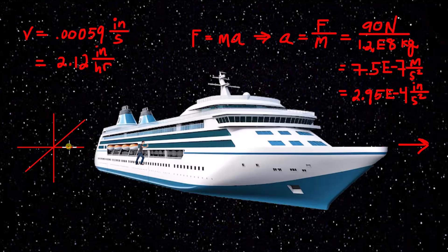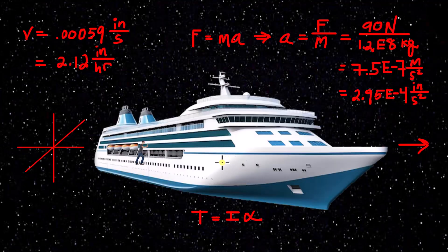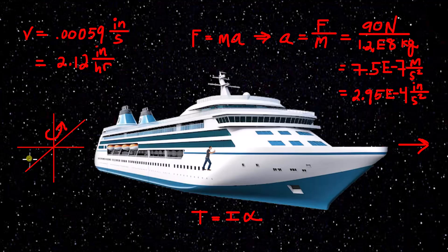If there is a net force applied on the ship away from its center of mass, then you have a force that creates a torque or a moment about one or multiple of these axes. Newton's law of angular motion says that the torque is equal to the moment of inertia of the body times the angular acceleration. So if you apply a force on the ship away from the center of mass, you'll be creating a torque on the ship about the center of mass, causing it to spin about that axis. The angular acceleration equals the torque divided by the moment of inertia of the ship, and you can have angular acceleration about one or multiple axes.